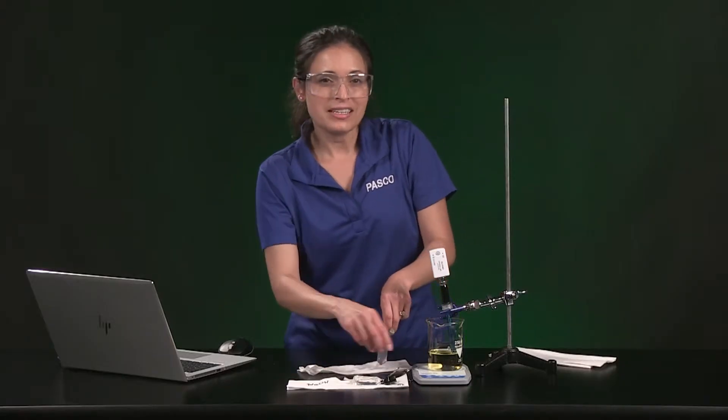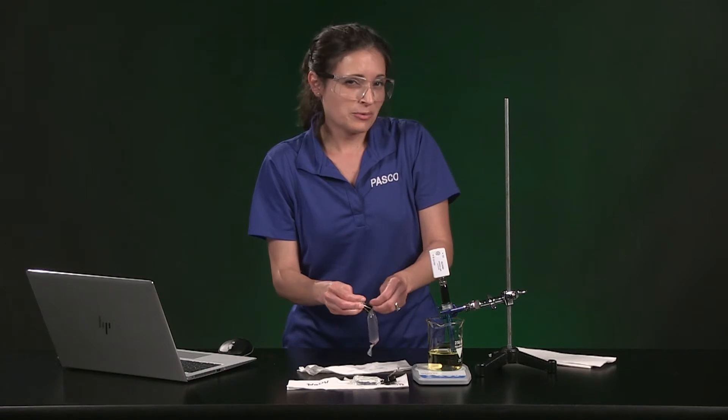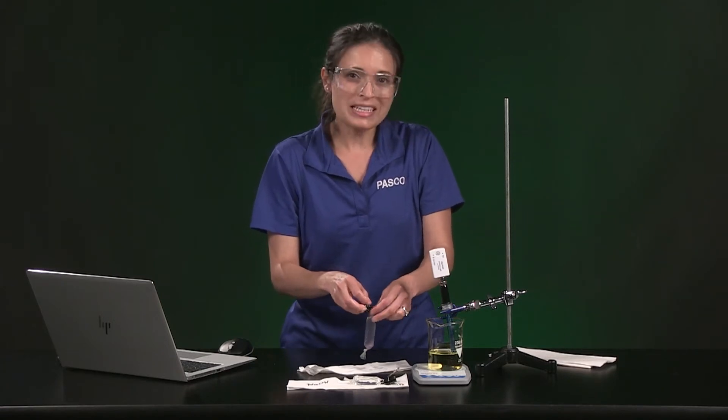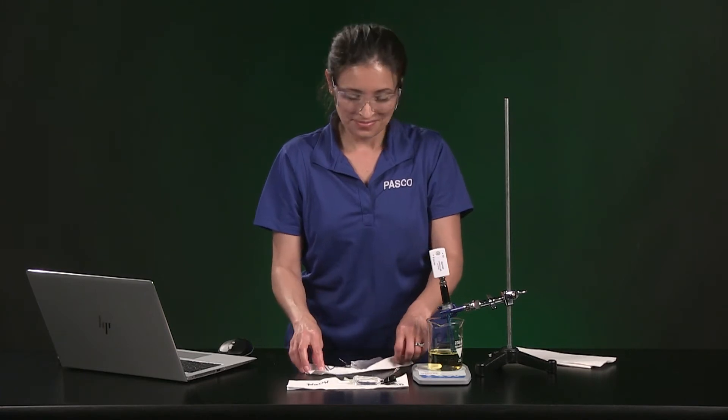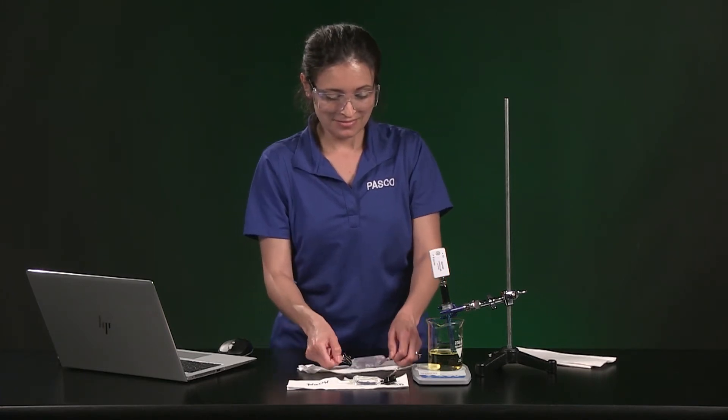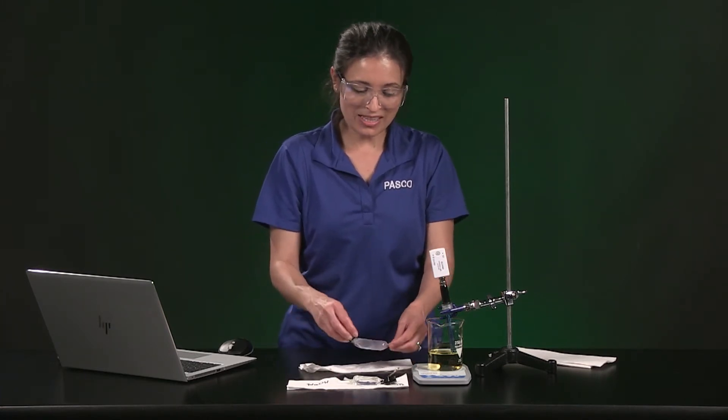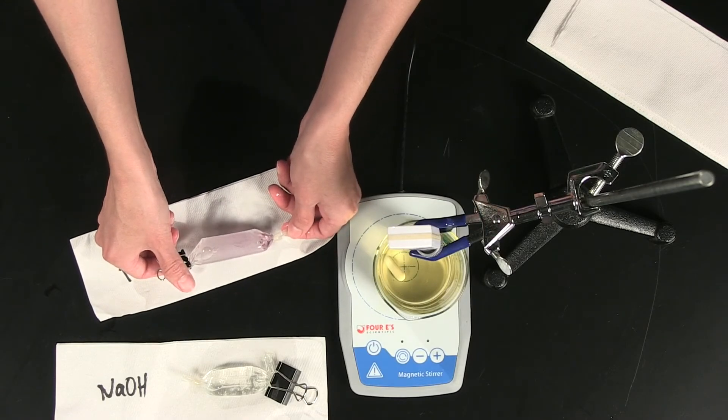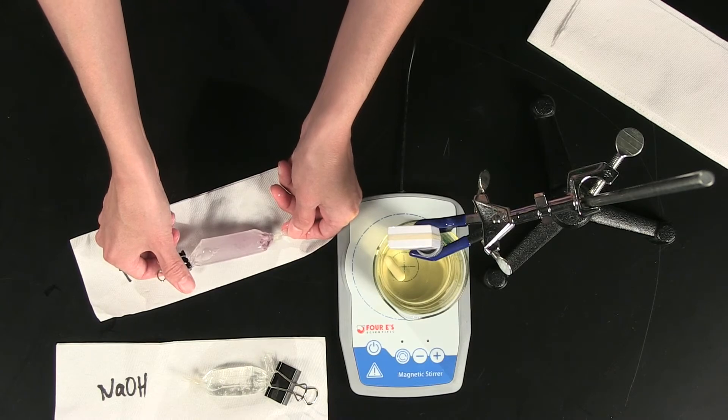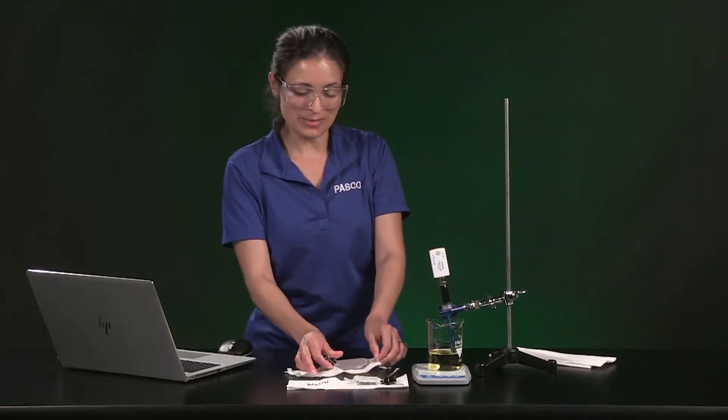For the second run we will get a new beaker of water, which will not be an iodine solution since we already tested to see if starch or iodine can pass through the bag. Let's look at the bag again. I just mixed it up a little more and you can probably see it. Okay, now I'm going to get my new beaker.